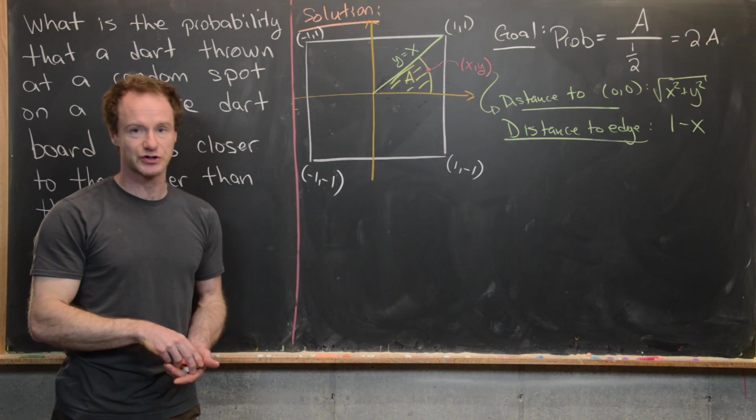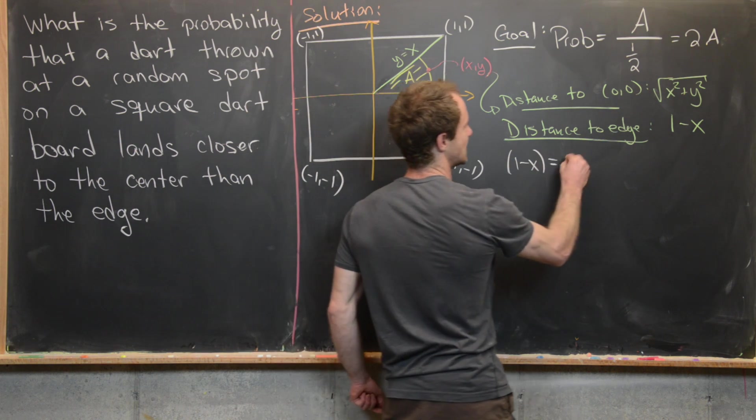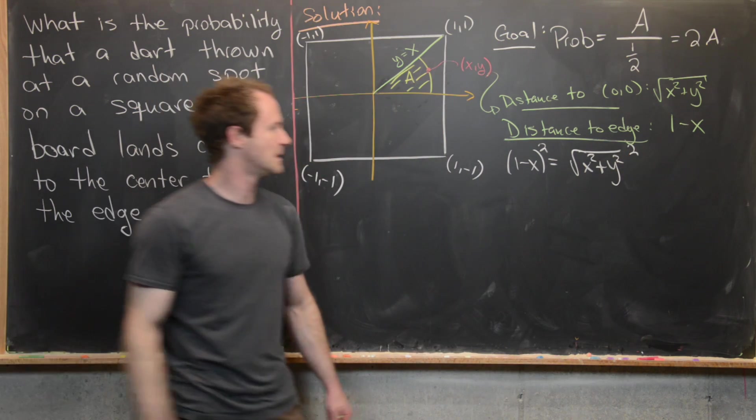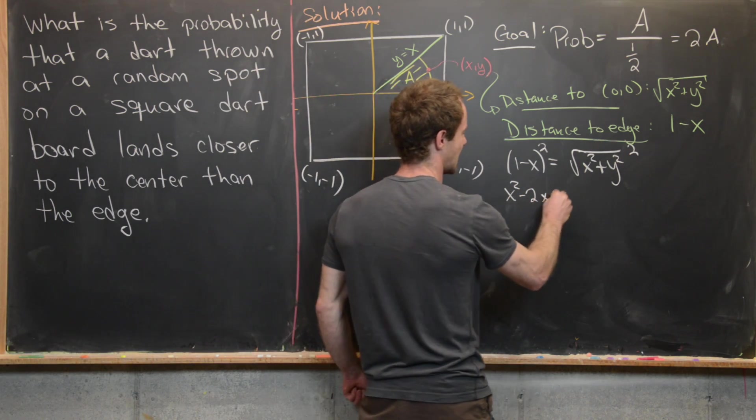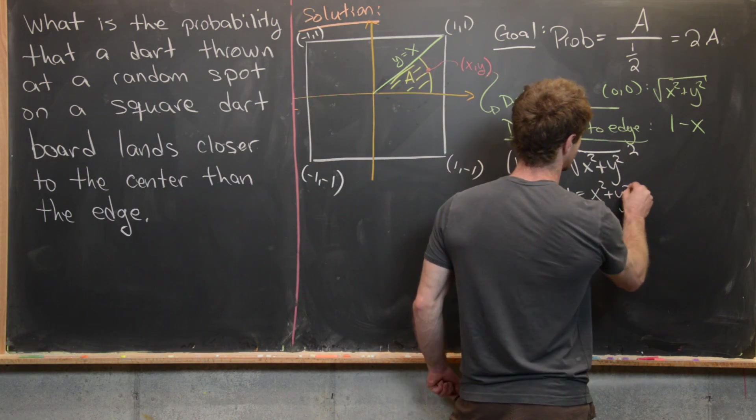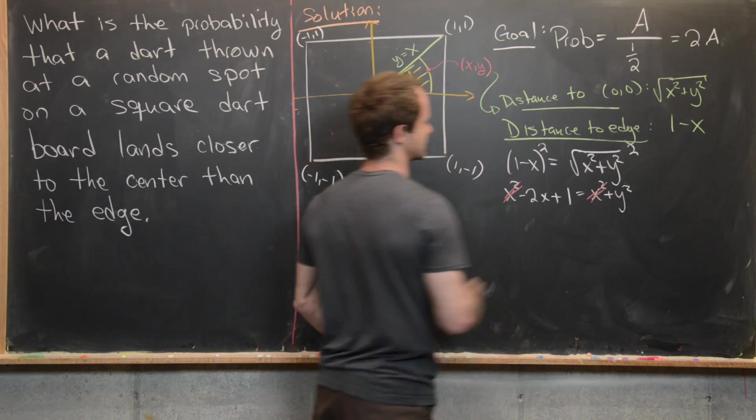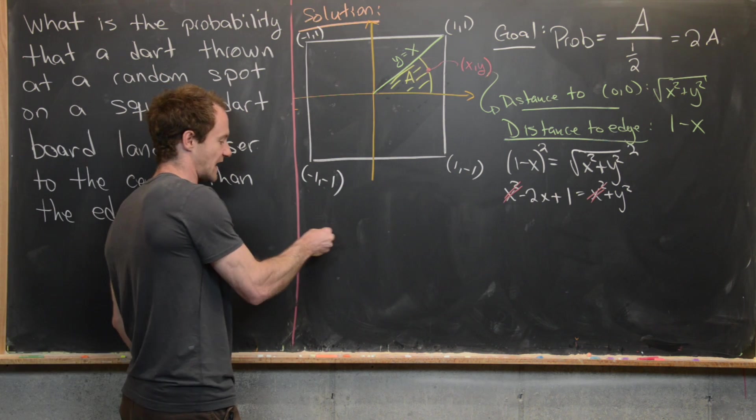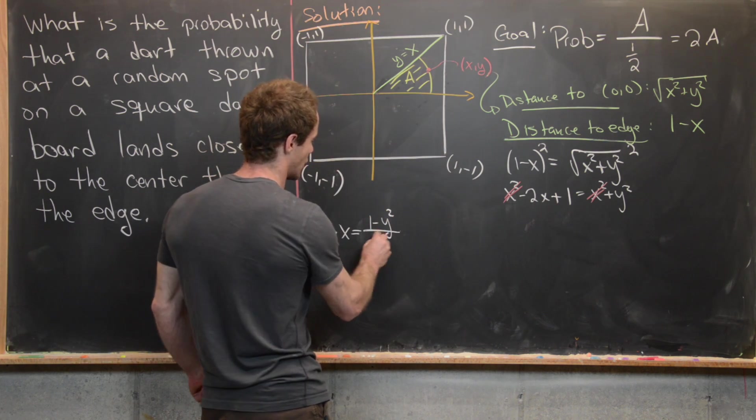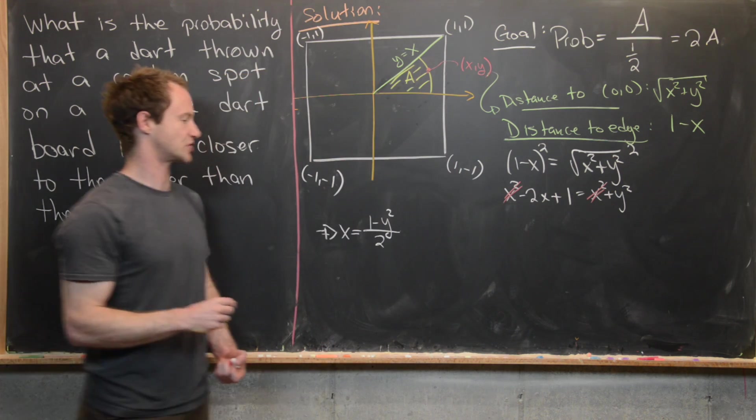So now we just set those things equal to each other and we'll get an equation for this curve. So notice we have 1 minus x equals the square root of x squared plus y squared. But maybe we'll square this to get rid of the square root. And that gives us x squared minus 2x plus 1. That's what we get if we square this left hand side. Equals x squared plus y squared. That's what we get if we square this right hand side. So notice this x squared cancels with that x squared. And now we can solve that for x. And we'll get that x equals 1 minus y squared over 2. So this is really like a sideways facing parabola. It's a parabola facing in this direction.